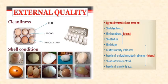For grading, the external and internal quality parameters are important. In the external category, one is cleanliness — there could be dirt, blood, or fecal stain. There is soundness — any kind of damage or cracks. And then the shell shape — the shape of the egg could sometimes be abnormal for different reasons. These are the things important for grading.